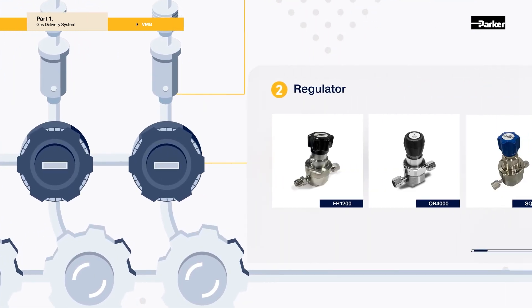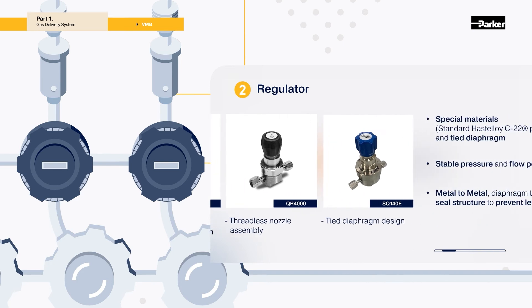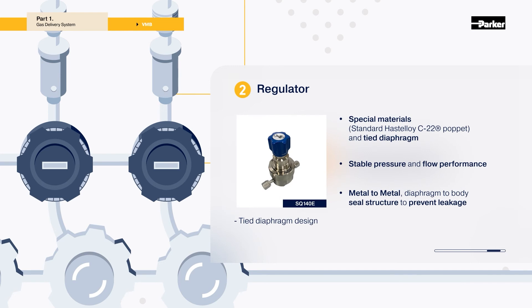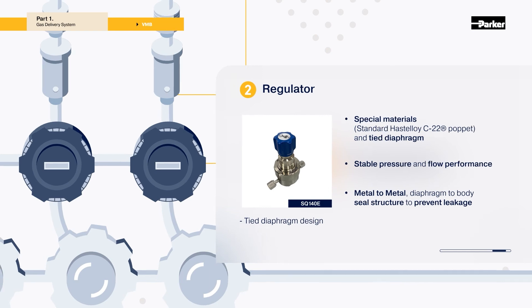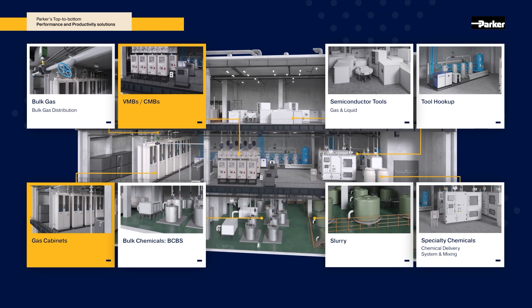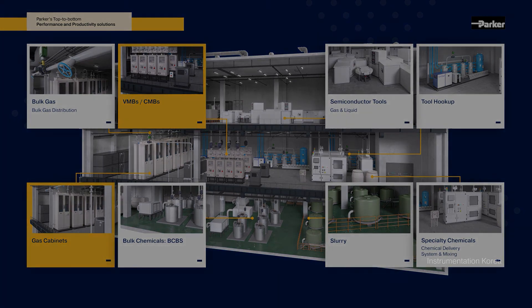Parker's regulator is invaluable. The SQ140E is a high flow and high performance point-of-use regulator, designed to be used in low pressure lines like VMB for gas companies and equipment manufacturer users. As a technical expert in gas and liquid delivery systems and processes for wafer processing, we can help you profit from today's developments while preparing for tomorrow's challenges.